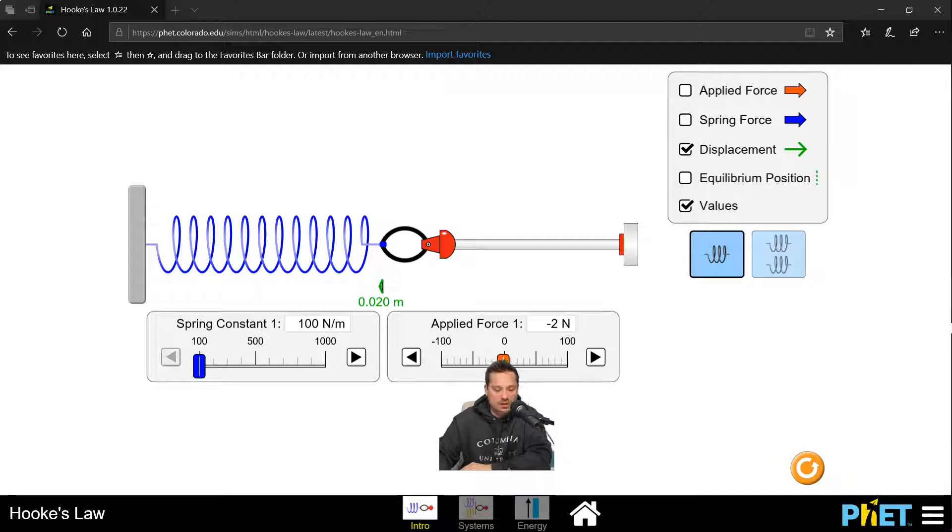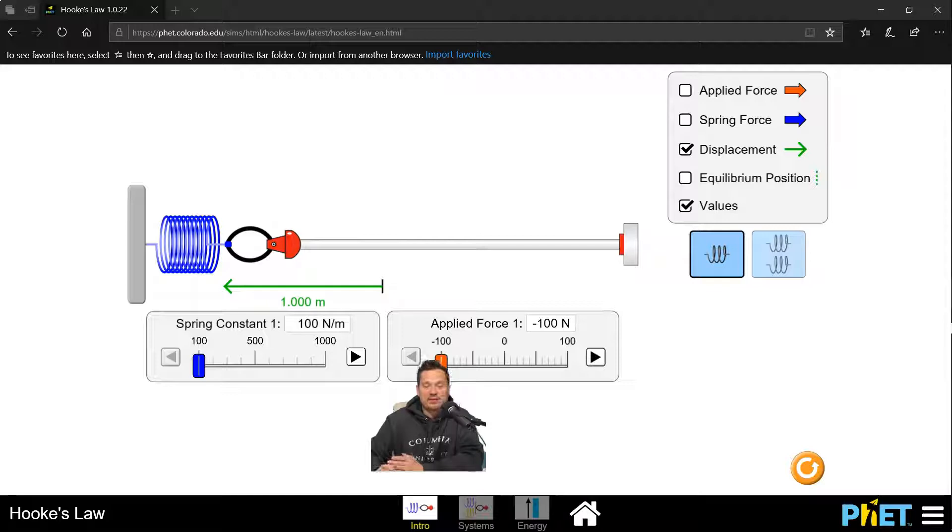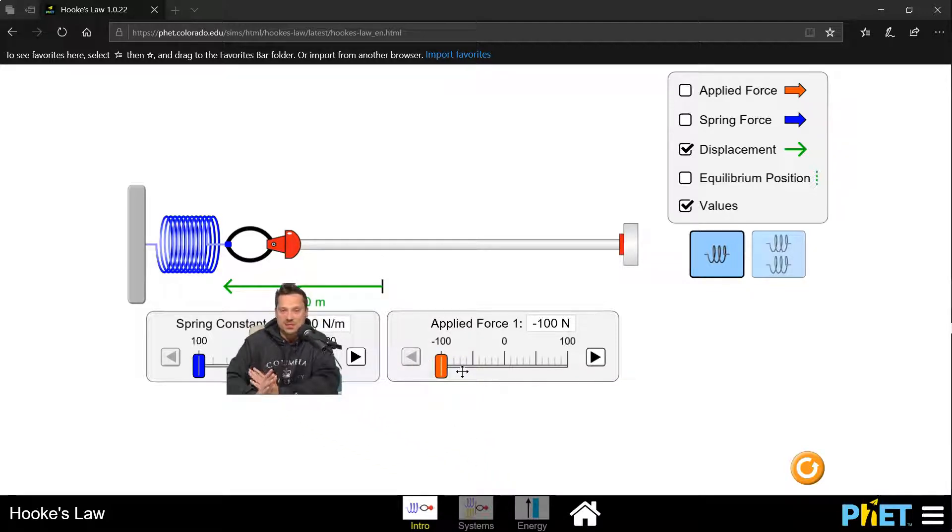Take a look. So now you see that there's an applied force of 100 newtons to the left. So in other words, negative 100 newtons. And that also causes a compression of 1 meter in the spring.